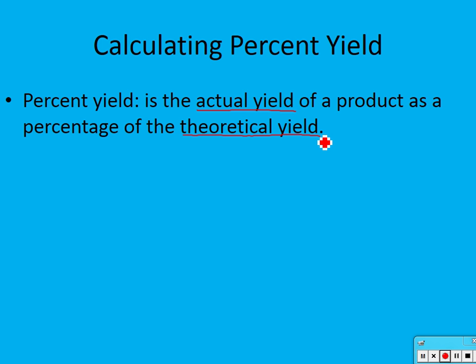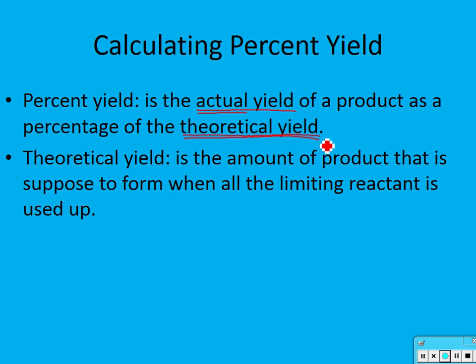There are a couple of things to note: actual yield and theoretical yield. Actual yield is what we actually get if you were to run the reaction. Theoretical yield is the amount of a product that is supposed to form when all of the limiting reactant is used up. In chemistry, we don't always reach the theoretical yield, so we're usually going to get a number that's a little bit smaller — and we call that the actual yield.